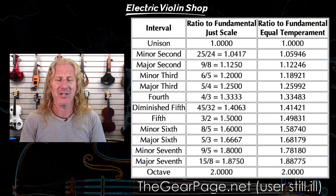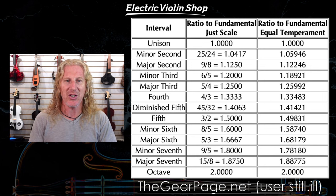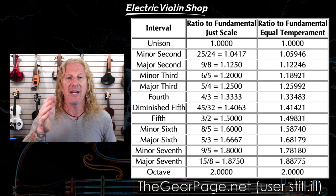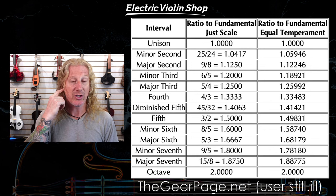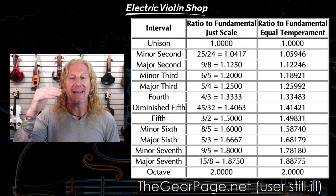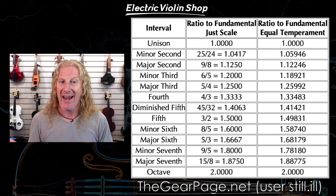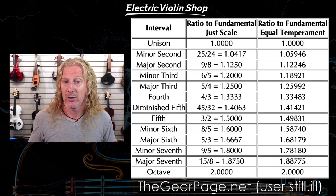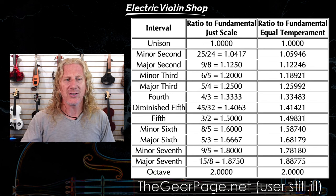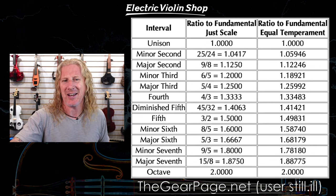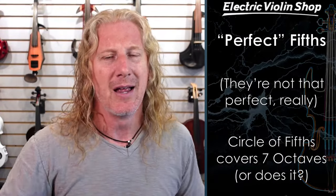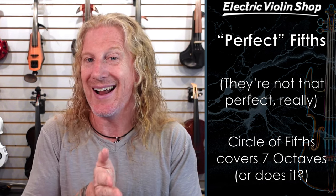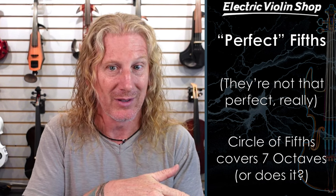This spreadsheet chart for the nerds shows the difference between the just scale — what your ear wants to hear — and the equal temperament scale, which is how we have to tune pianos so they actually work. So all this is interesting and nerdy and fun, but how do we actually use it? It turns out perfect fifths are not actually perfect.